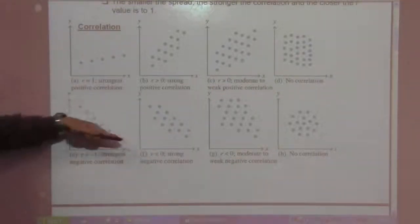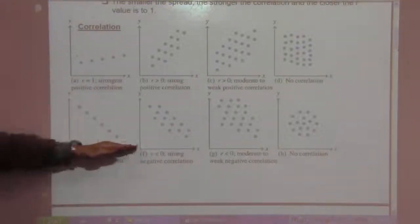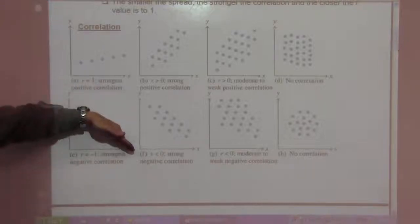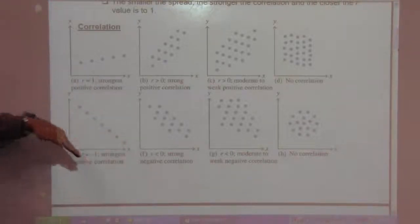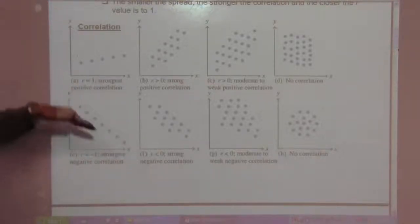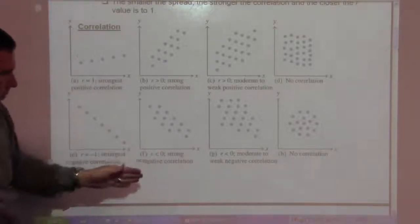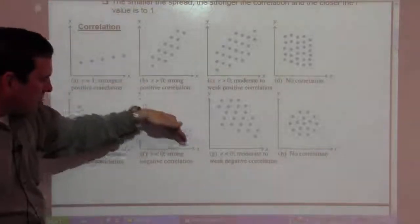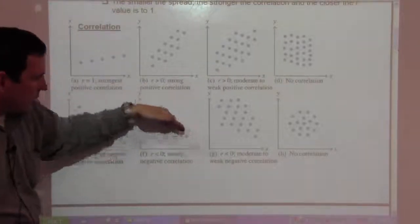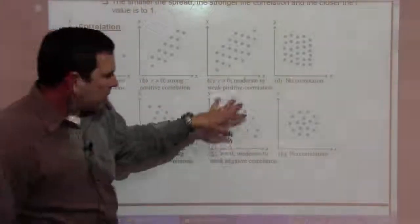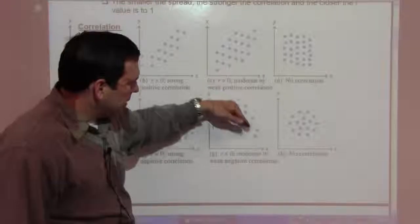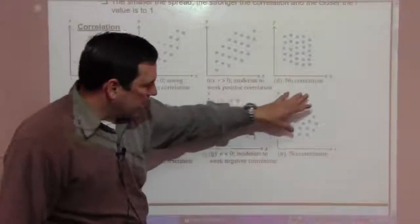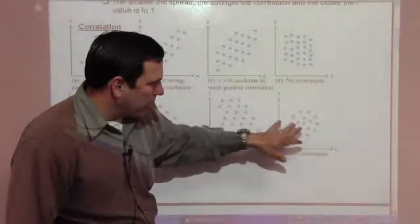Here, R is negative one — as X gets bigger, Y gets smaller. That's a very strong correlation, makes a nice line. R is negative, it's strong but a little spread out. Here it's very spread out — you can still see somewhat of a correlation. And here again, no correlation.